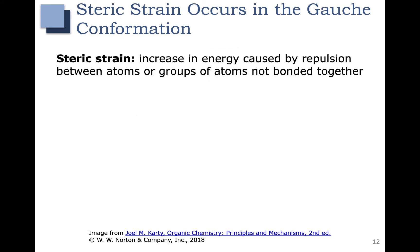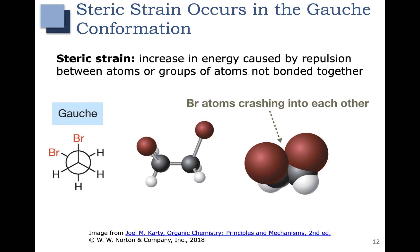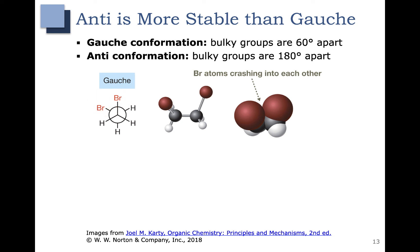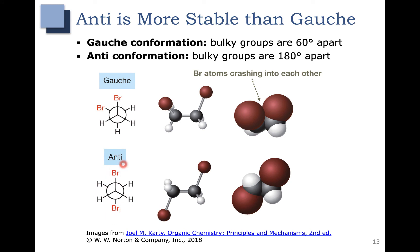When we add groups that are not hydrogens, we encounter steric strain — an increase in energy caused by repulsion between atoms or groups of atoms that aren't bonded together. In 1,2-dibromoethane, even in a staggered conformation, the bromine groups are close enough to essentially crash into each other, as seen in the space-filling model. This interaction is known as a gauche interaction, where the bulky groups are 60 degrees apart. The anti-conformation, where bulky groups are 180 degrees apart, is the optimum situation — it minimizes steric strain.